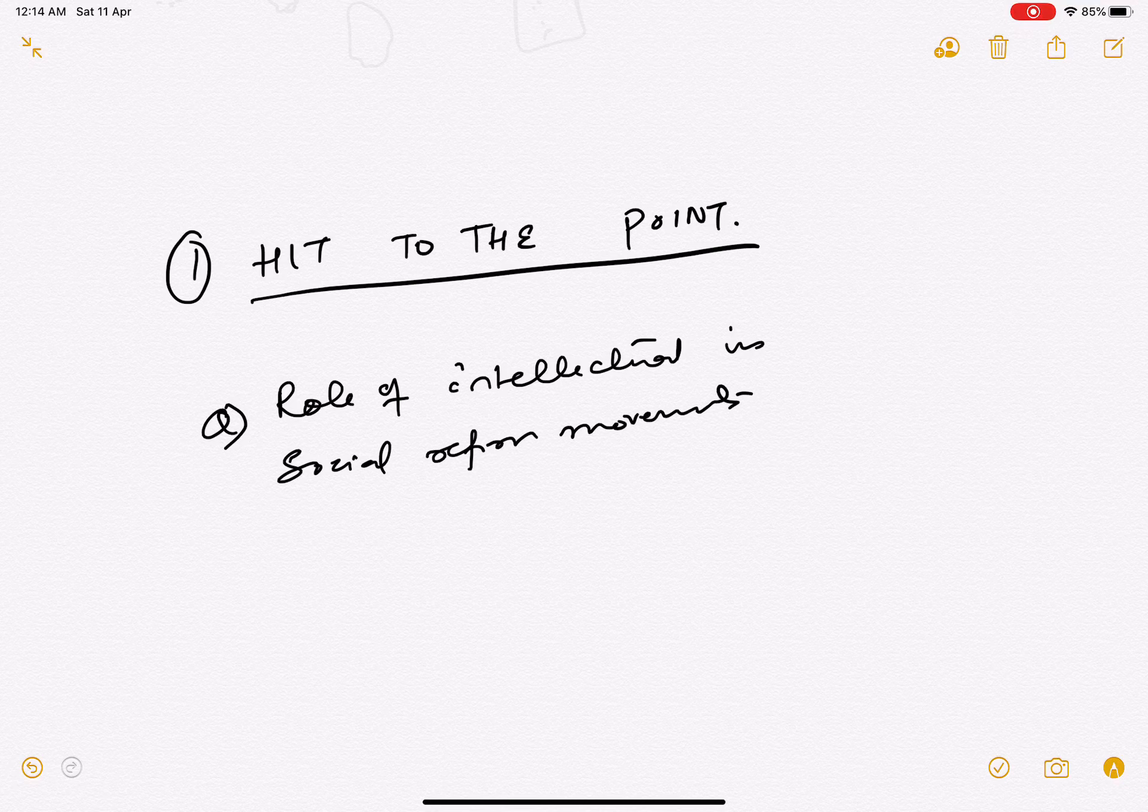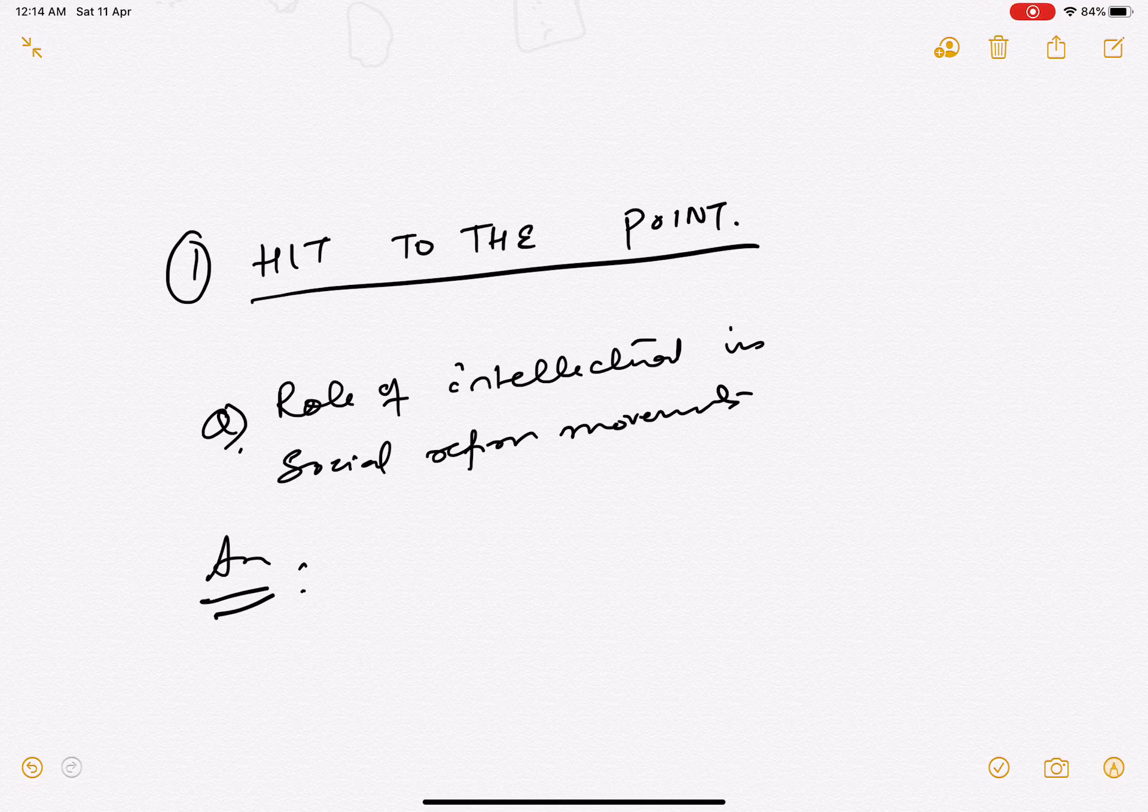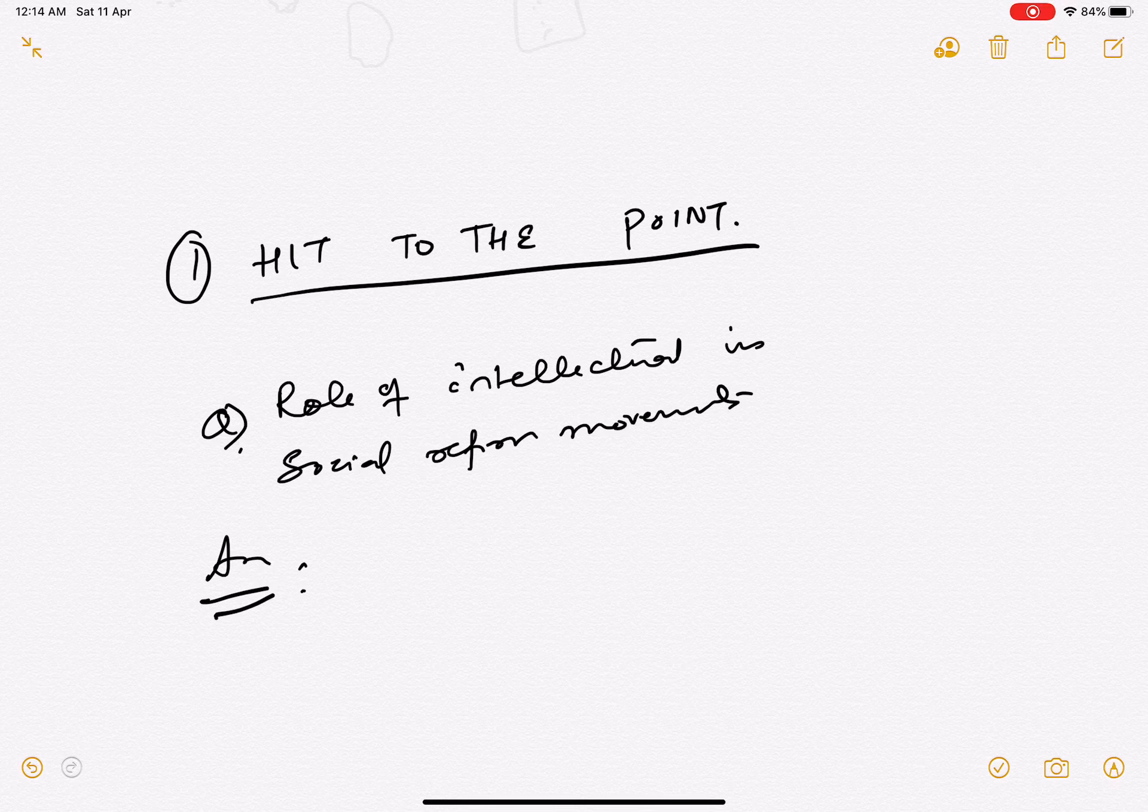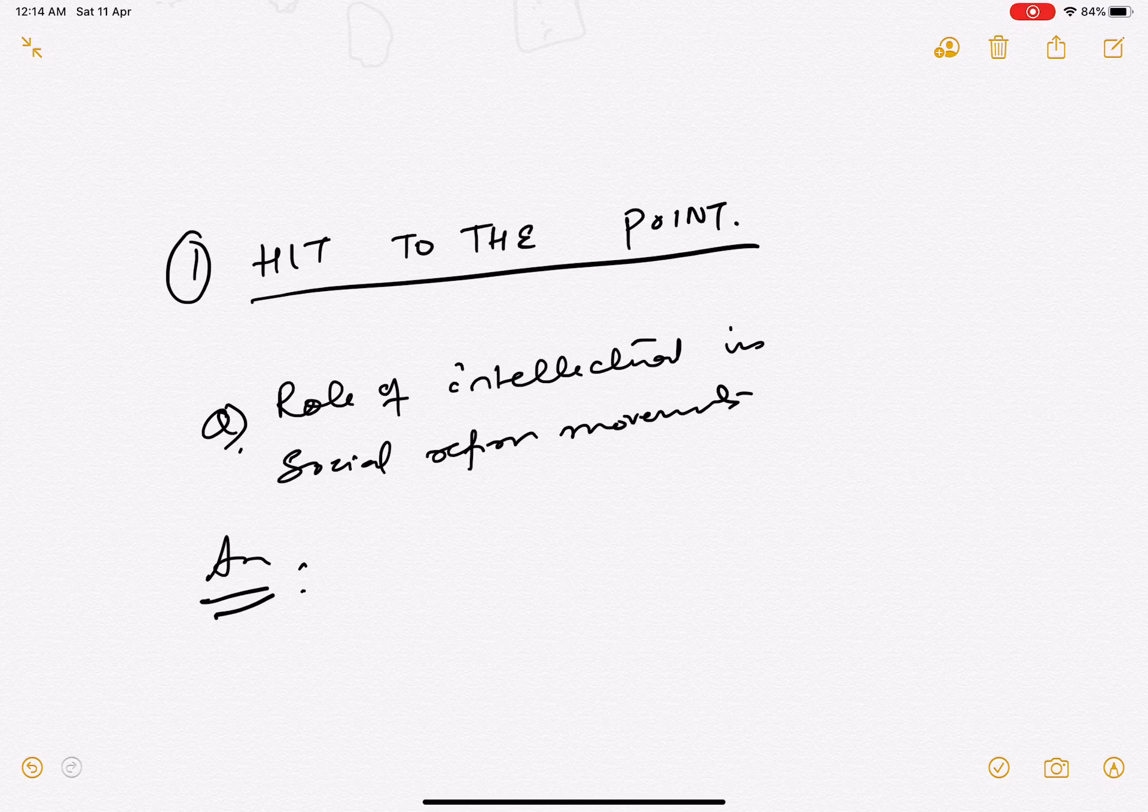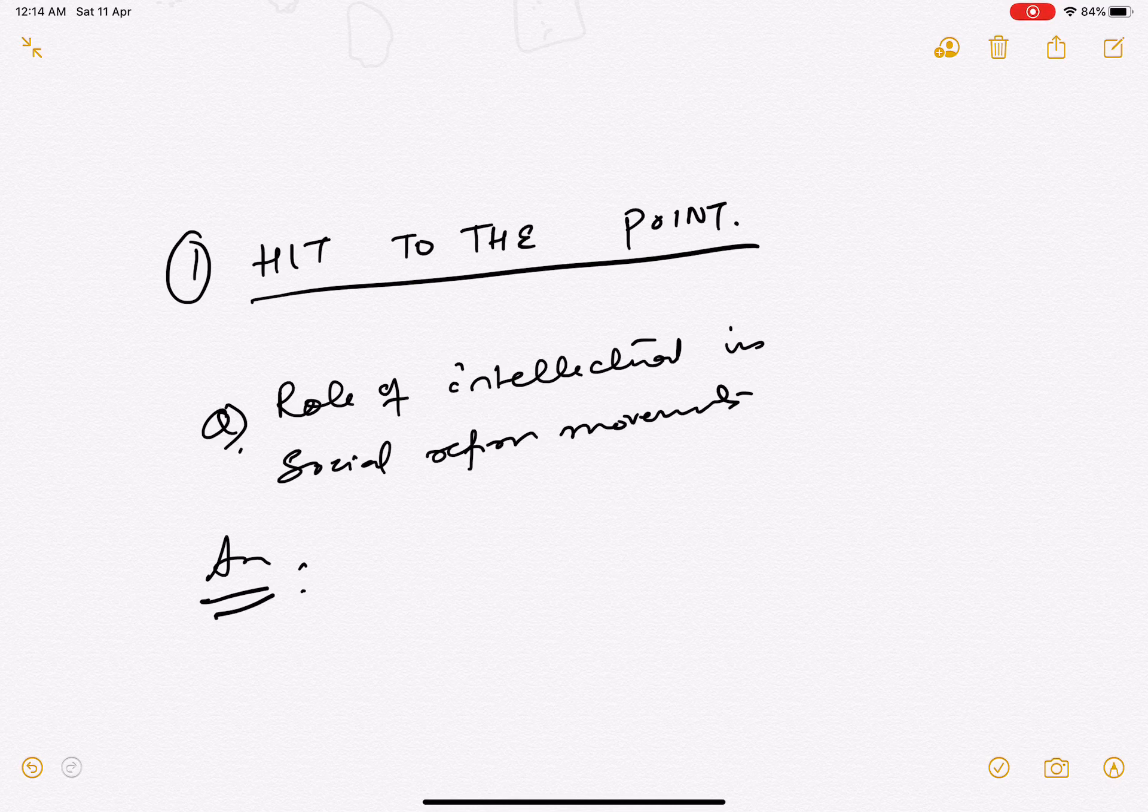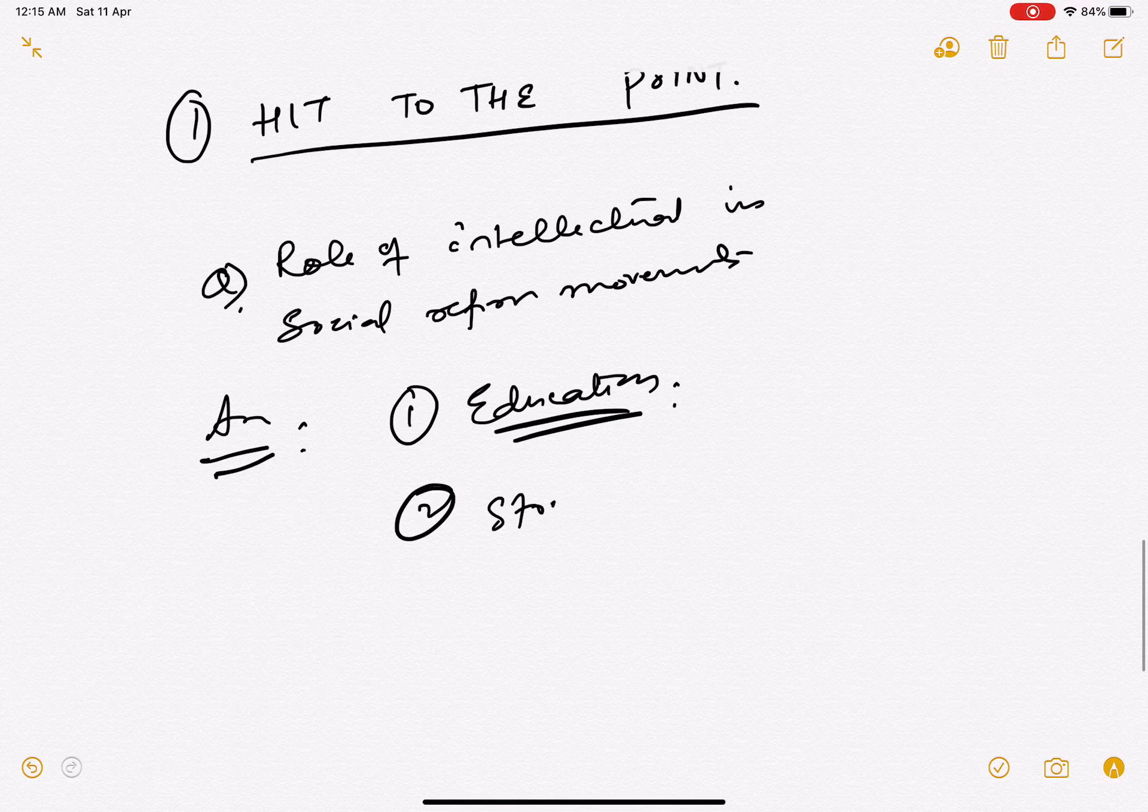I have seen that in such questions, people start like: 'The social reformers were the light of the movement, they were modern people who were educated very well, they were educated in this and that, and hence they brought this and that.' This bullshit, don't do that. Simple: The role of the intellectuals in the social reform movement are as follows. First, how did they propagate the education by opening educational institutions? Secondly, how did they stand against the social evils?